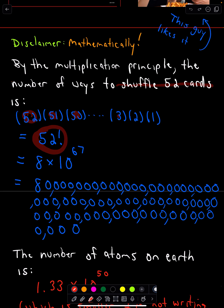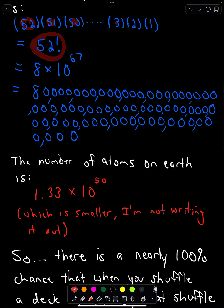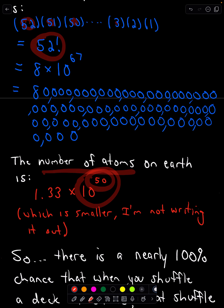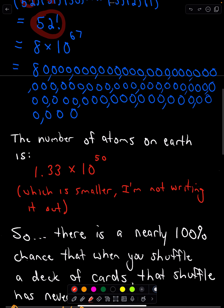Well, it turns out that the number of atoms on Earth is only 1.33 times 10 to the 50th power. So the number of atoms on Earth is actually smaller than the number of unique ways to shuffle a deck of cards.